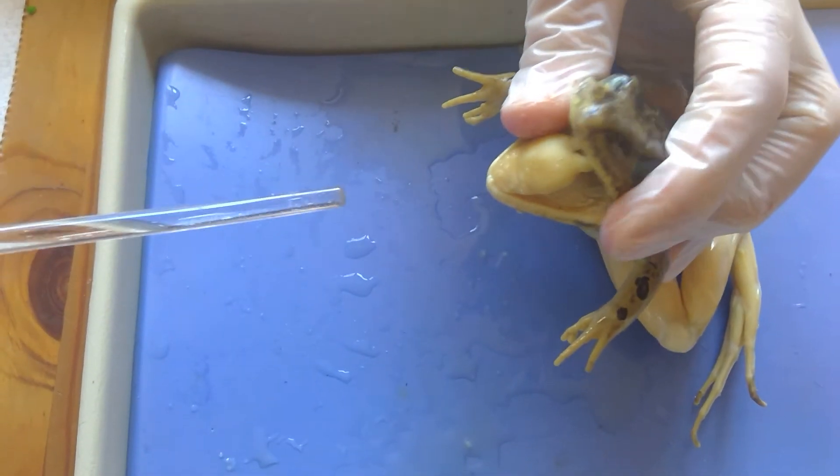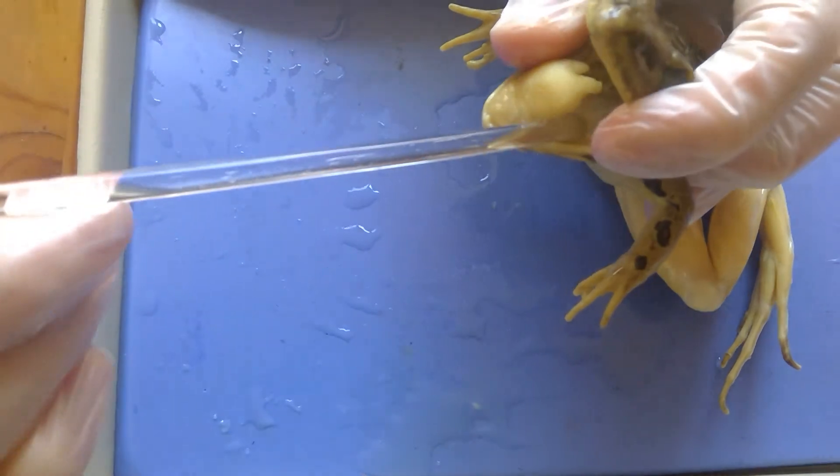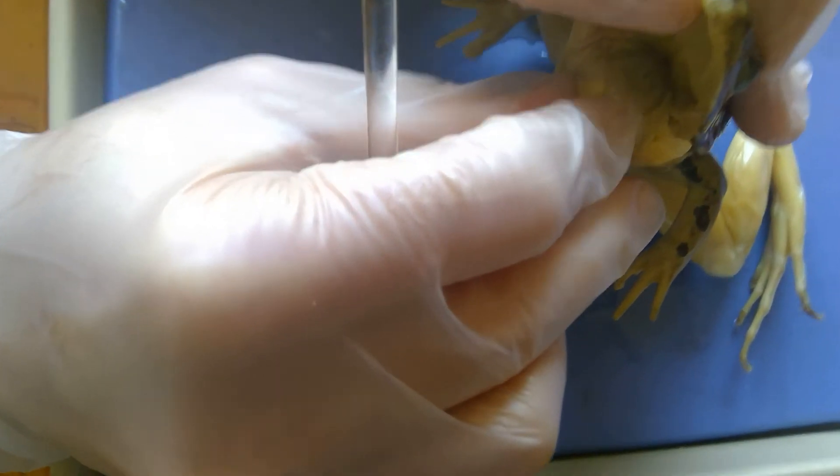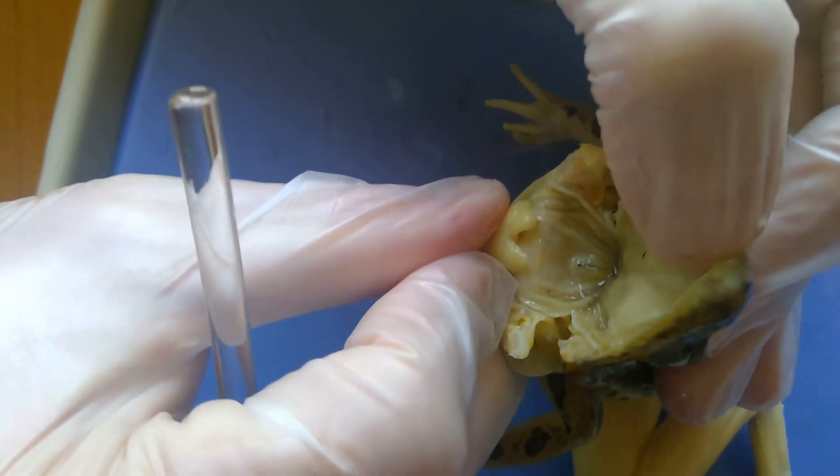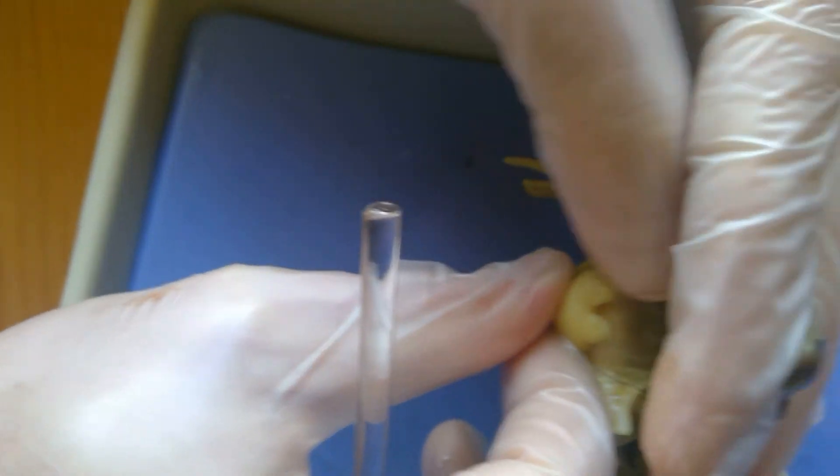Now, the second part of this is where we're identifying the two holes that are in the back of its throat. So I'm going to turn it like that so you can see. And the two holes, if I hold that open like this...